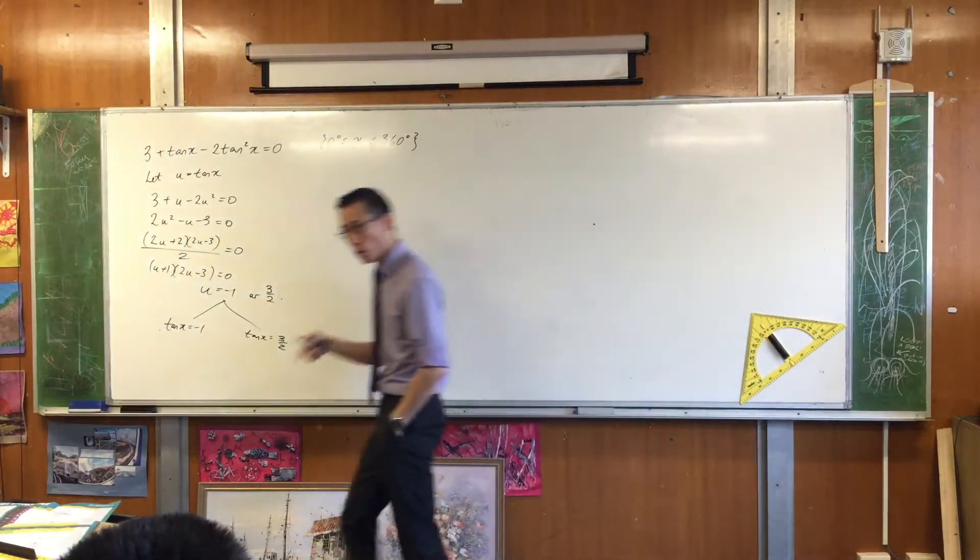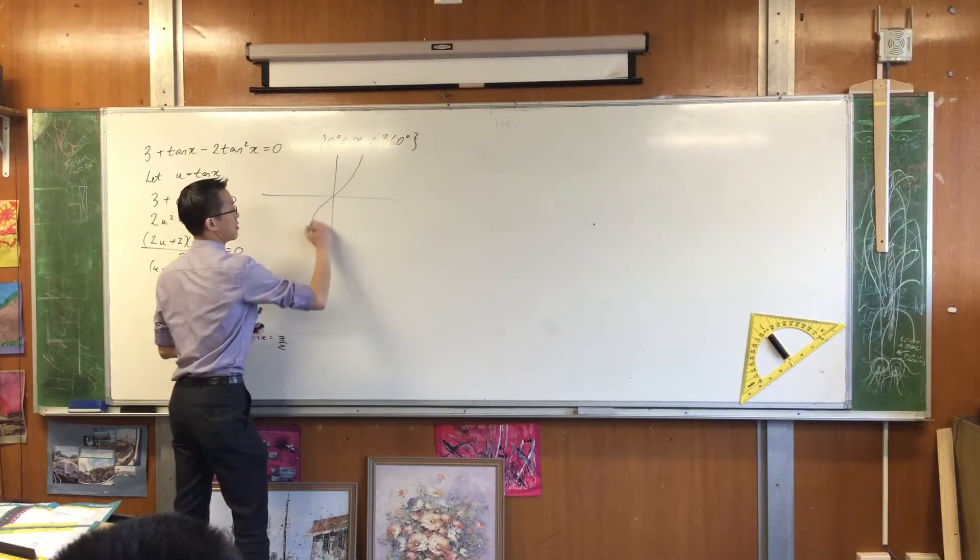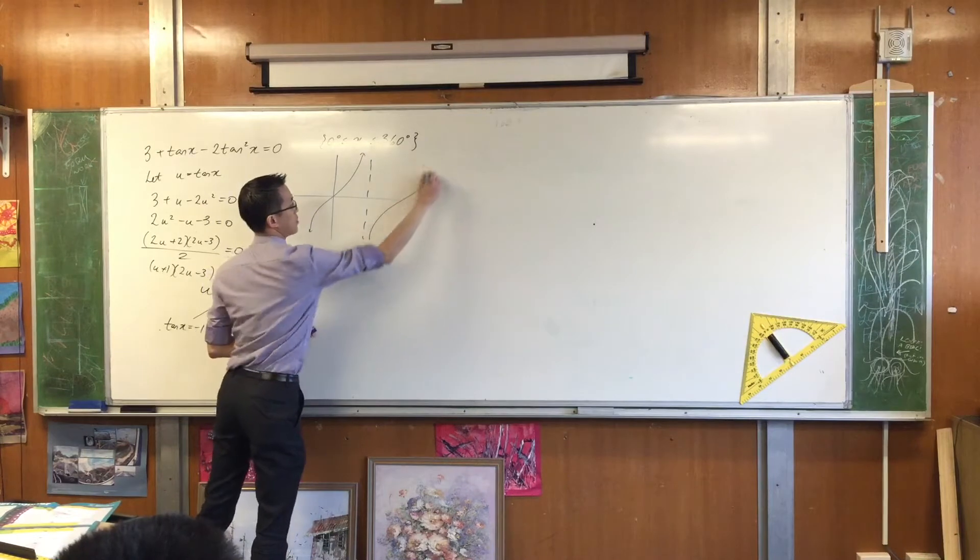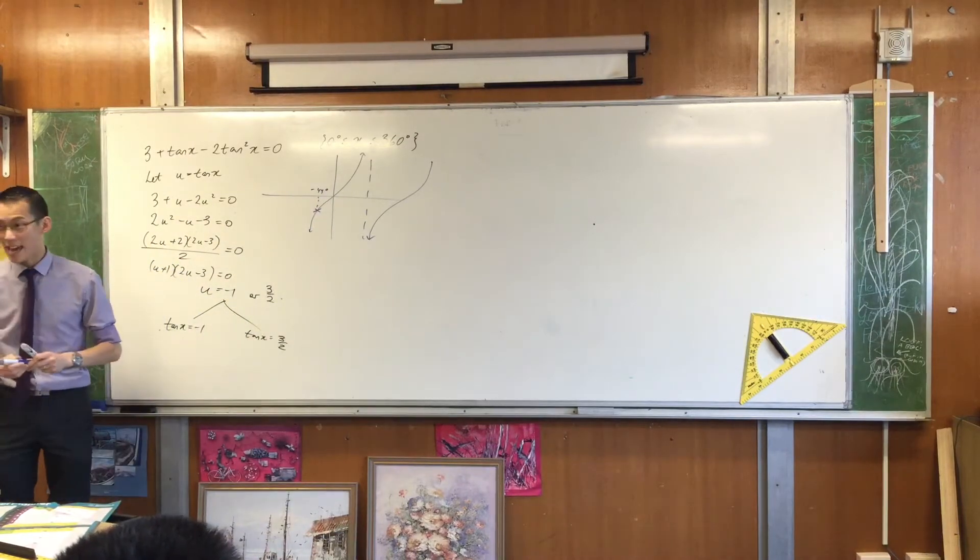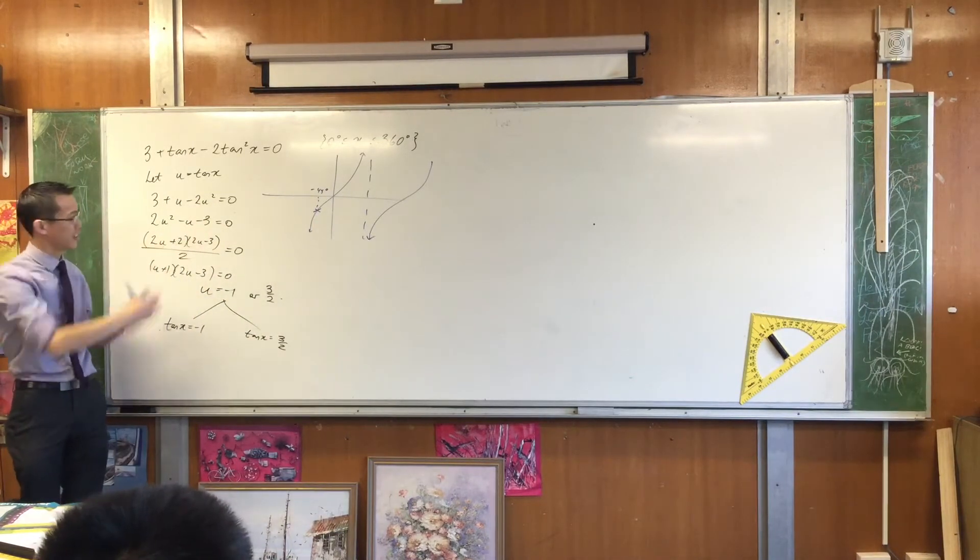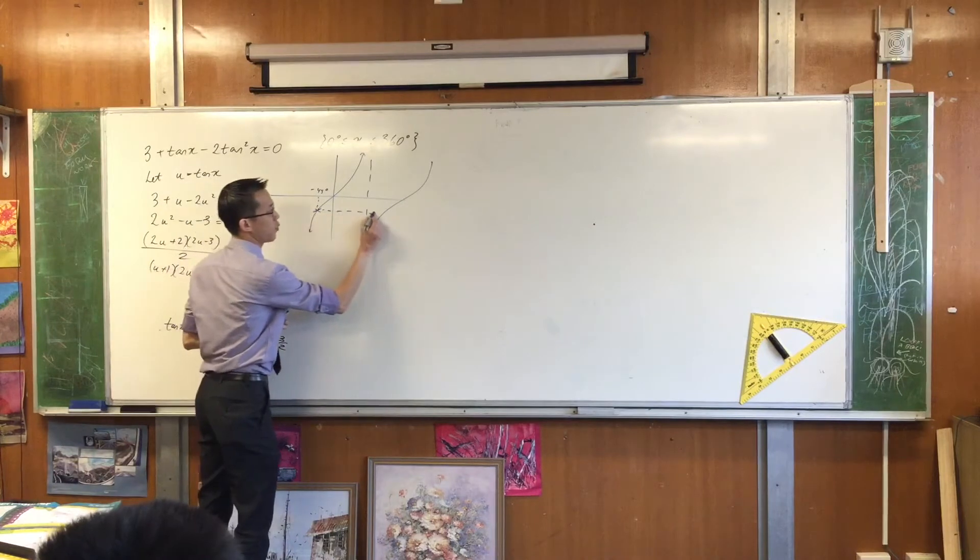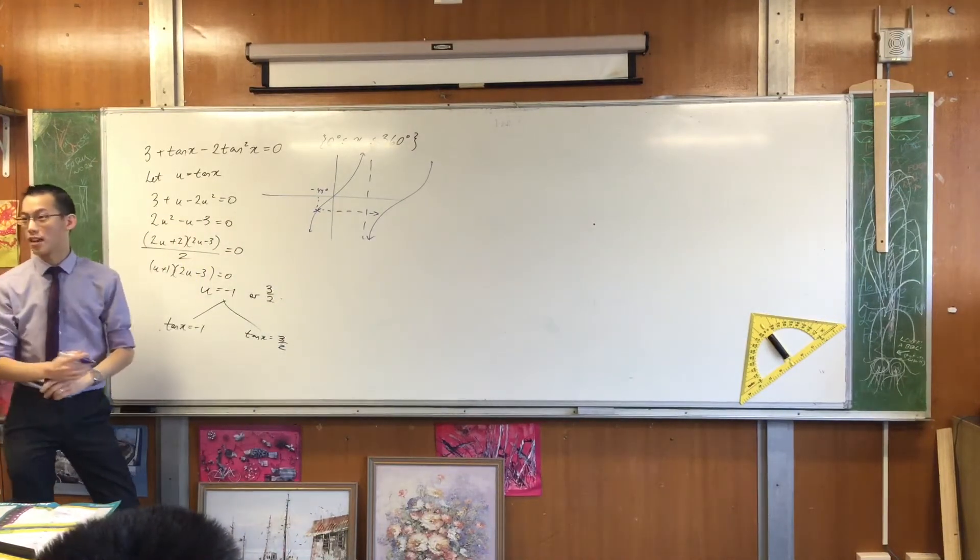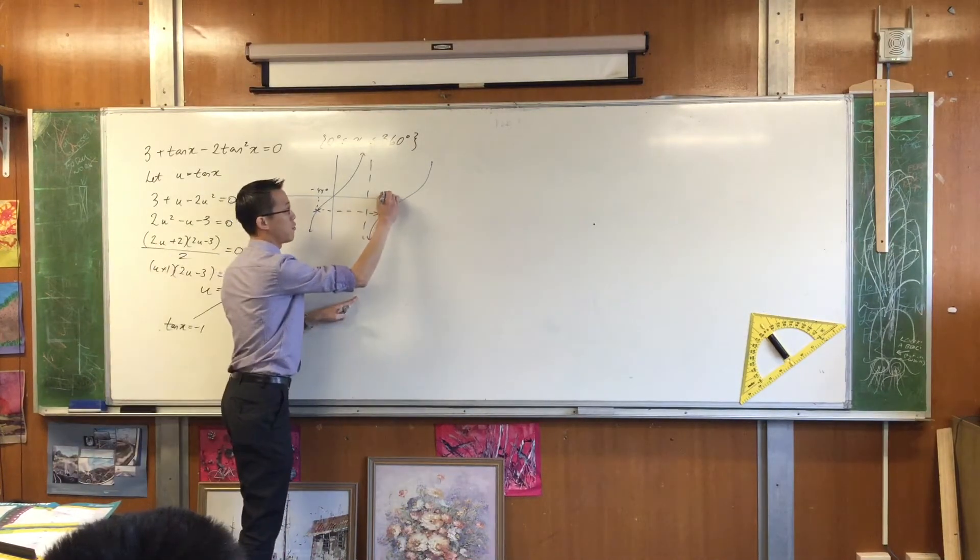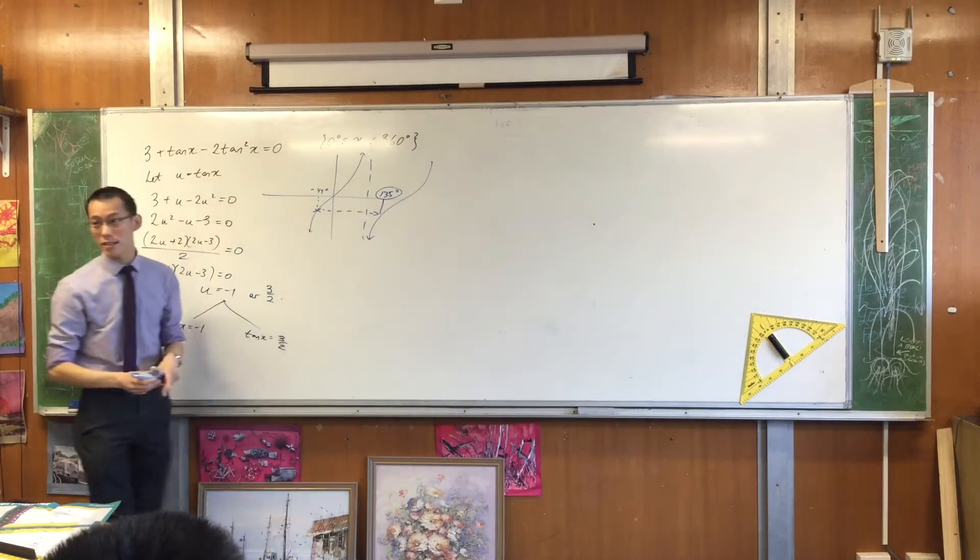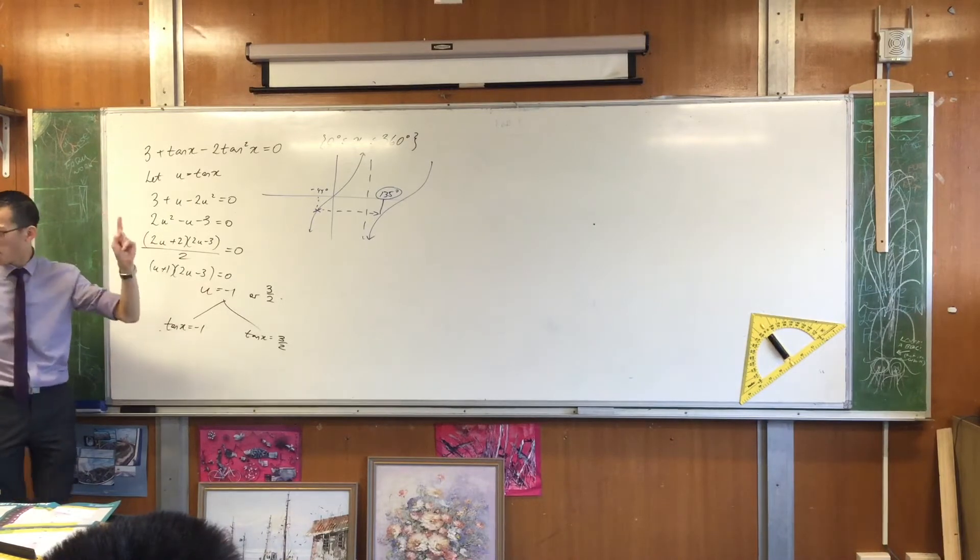That's okay. If negative 45 degrees is a solution, there it is, then I can take advantage of the fact that tan is a periodic function, just like every other trig function. So if I go forward a certain amount, I'm going to get another solution. If I go forward a certain amount, what certain amount is that? The period of tan is 180 degrees. So if I go forward 180, what value will that be?